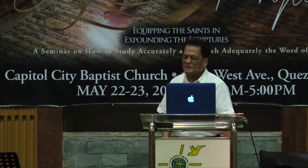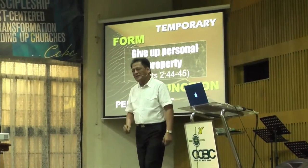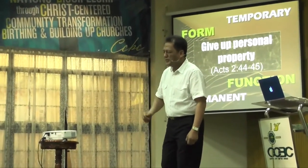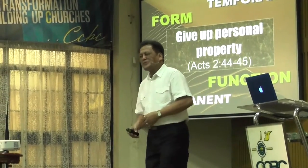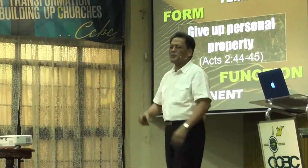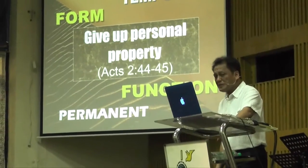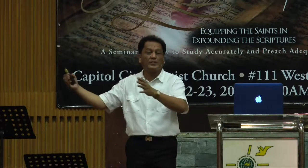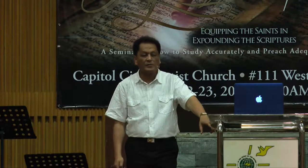How about 'give up personal property' — Acts chapter 2, 44 to 45. Permanent or temporary? Of course, that was only a temporary arrangement that they had there. And later on, when they had a famine in the land, they had to seek help from the Gentile churches. The apostle Paul was able to gather some offering for the Jerusalem church.